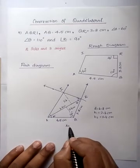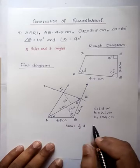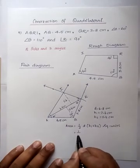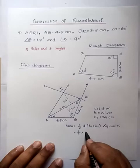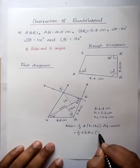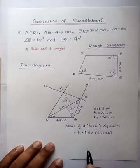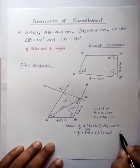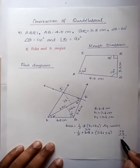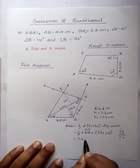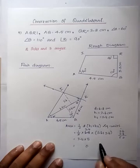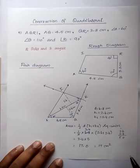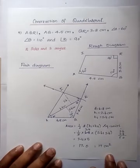Now, area. Area of quadrilateral is half into d into h1 plus h2 square units. Half into diagonal value. Diagonal value is 6.8 into h1 plus h2. 2.6 plus 2.4. Two cancels. 3.4 into 5. 2.6 plus 2.4 equals 5. Area is 5 twos are 20, 5 threes are 15, 15 plus 2 equals 17. 17.0 equals 17 cm². The area of quadrilateral is 17 cm².